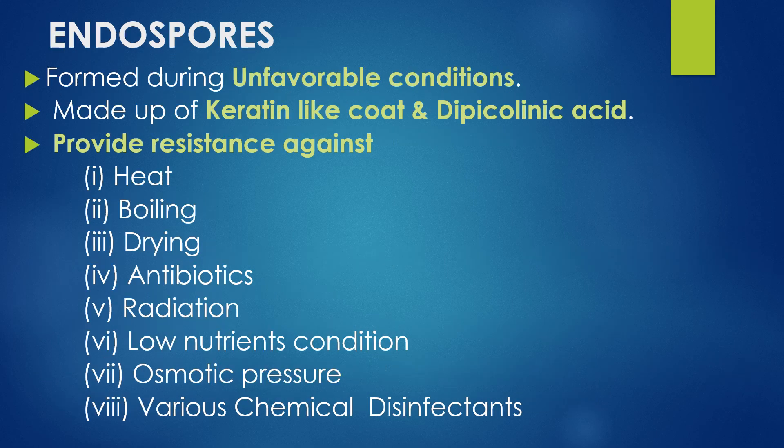Endospores are formed during unfavorable conditions. They are made up of a keratin-like coat and dipicolinic acid. Endospores provide resistance against heat, boiling, drying, antibiotics, radiation, low nutrient conditions, osmotic pressure, and various chemical disinfectants.